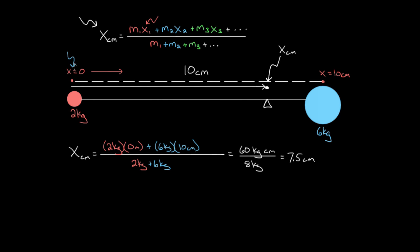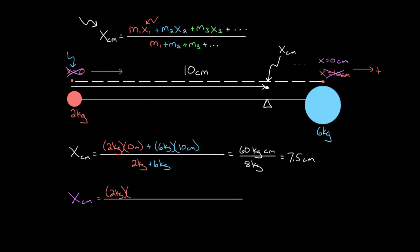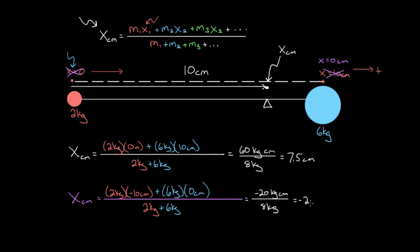Just to show you — you might wonder: we can choose any point as x equals zero, so won't we get a different number? You will. So instead of picking the left side as x equals zero, let's say we pick the six kilogram mass's position as x equals zero. We'll have two kilograms times the location of the two kilogram mass — but now it's not zero. If this is zero and positive goes right, the two kilogram mass is negative 10 centimeters to the left. Plus six kilograms times zero — since the six kilogram mass is now at x equals zero — divided by two plus six kilograms. Two times negative 10 gives negative 20 kilogram-centimeters, divided by eight kilograms, gives us negative 2.5 centimeters.